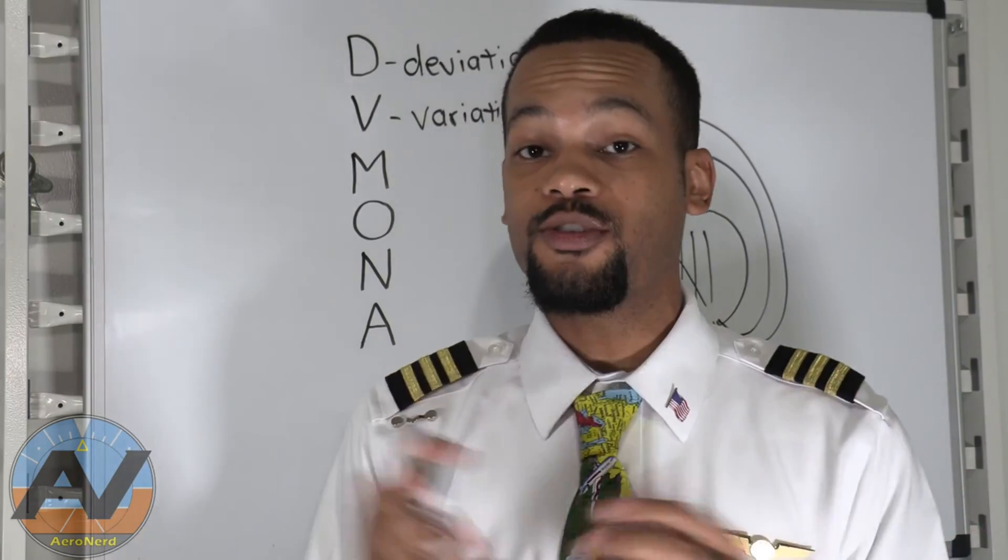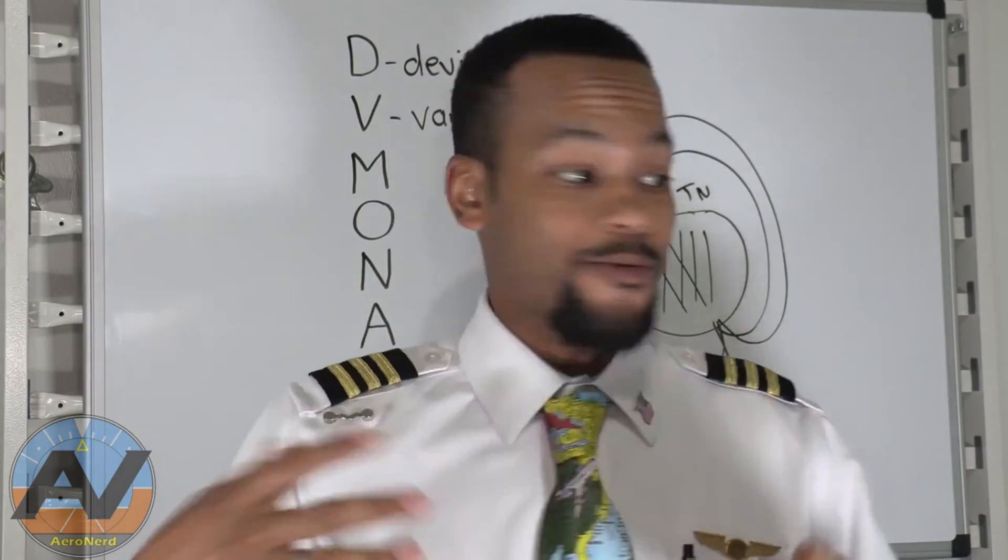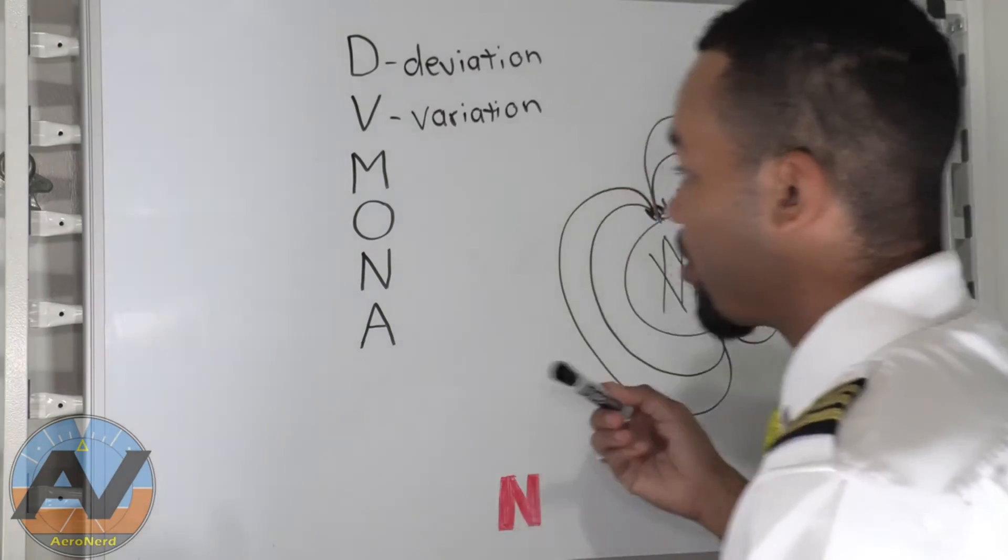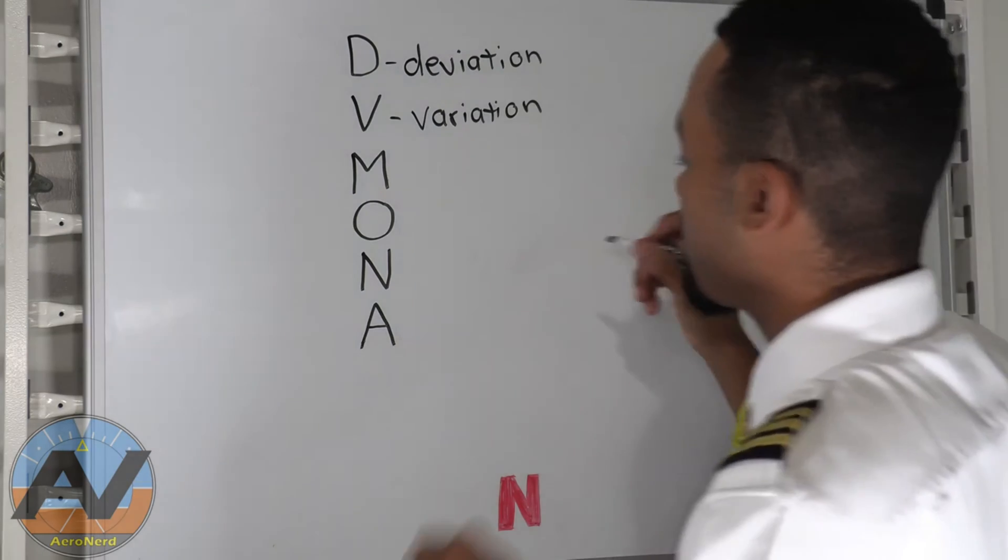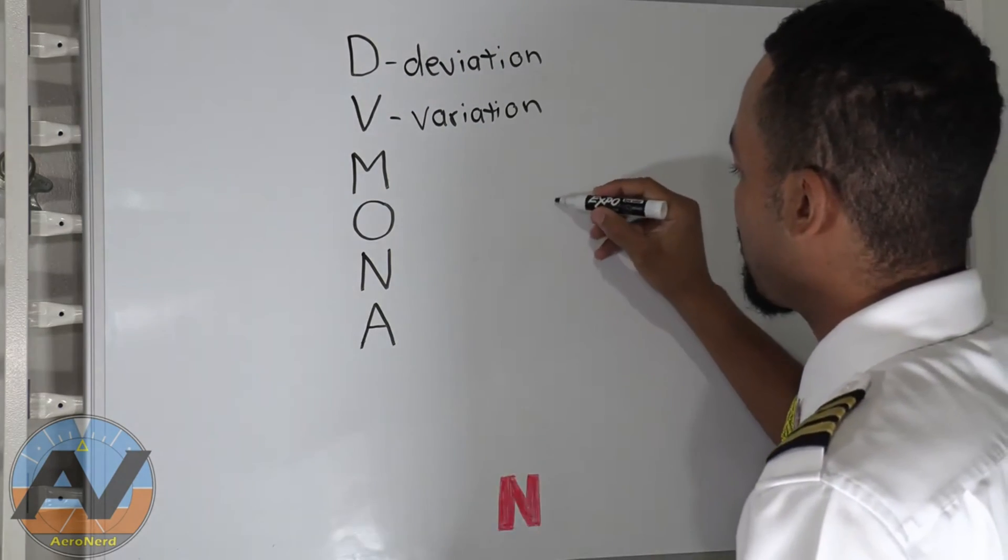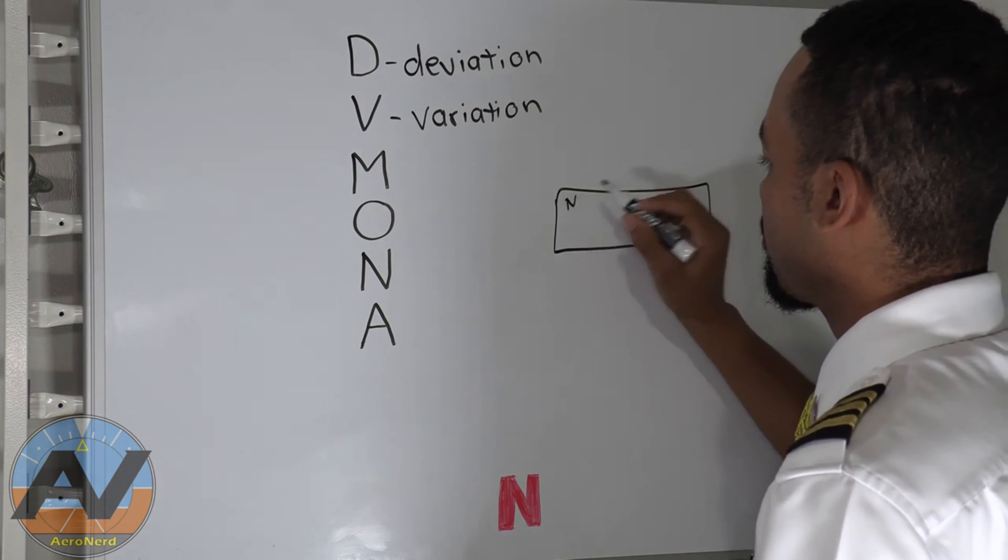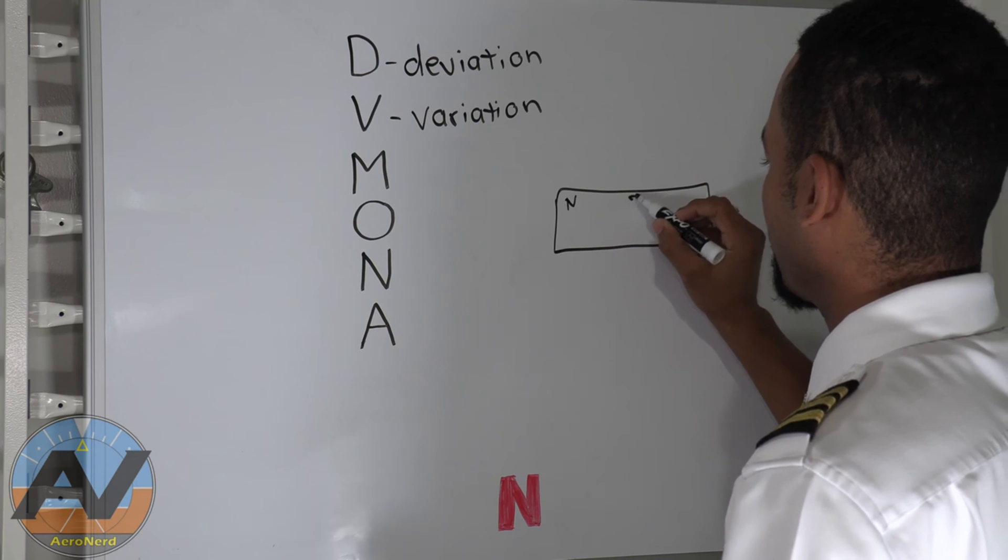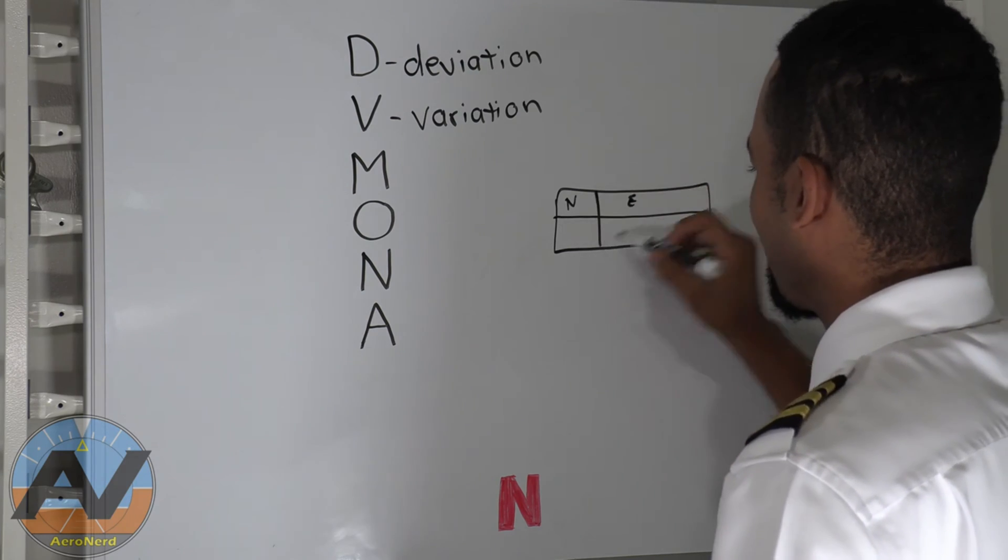But anyway, go back to deviation. Deviation, like I said before, the northern part of the magnetic compass is prone to magnets, to metal, right? And what do we have in our airplane? Lots of metal in our radios, right? So it actually interferes with that accuracy of our compass.